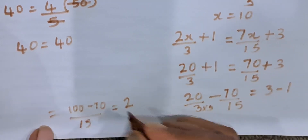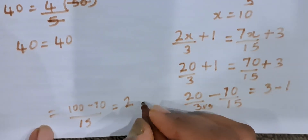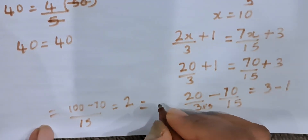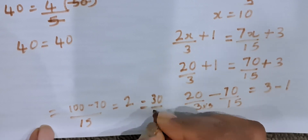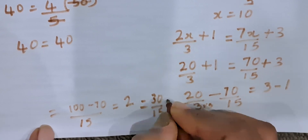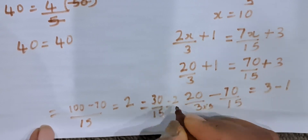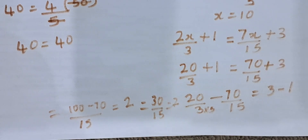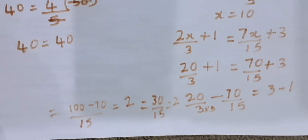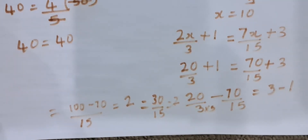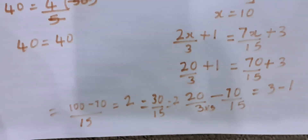30 upon 15 is 2. So, 2 is equal to 2. Left hand side is equal to right hand side. So, we have verified the answer. We have checked the results for the 8th one.